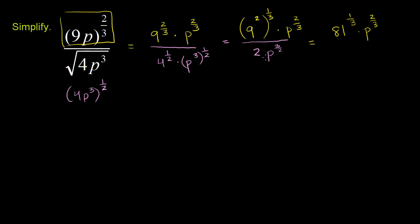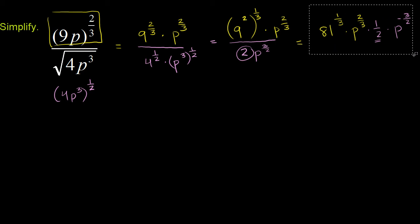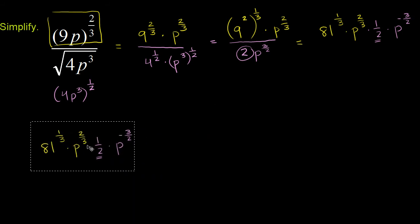Instead of writing the 2 and p to the 3/2 in the denominator, let me write them as negative exponents. A 2 in the denominator is the same thing as 1/2. So if I want to write it in the numerator, it's the same thing as 1/2. And p to the 3/2 in the denominator is the same thing as p to the negative 3/2. So this whole expression so far has been simplified to this.